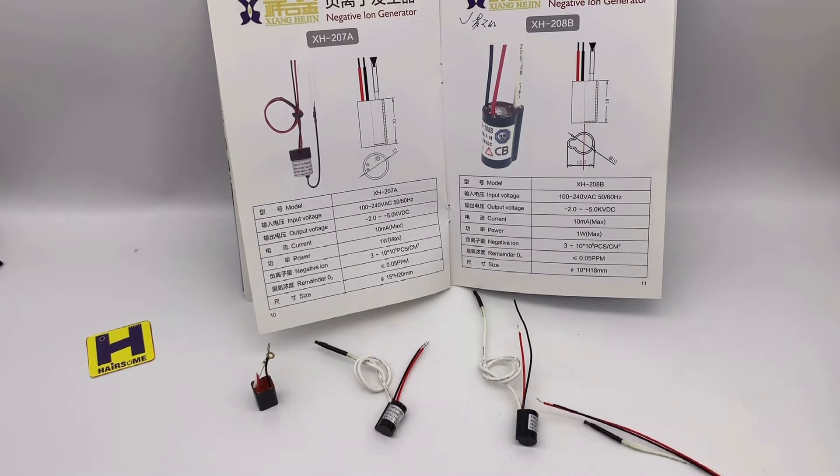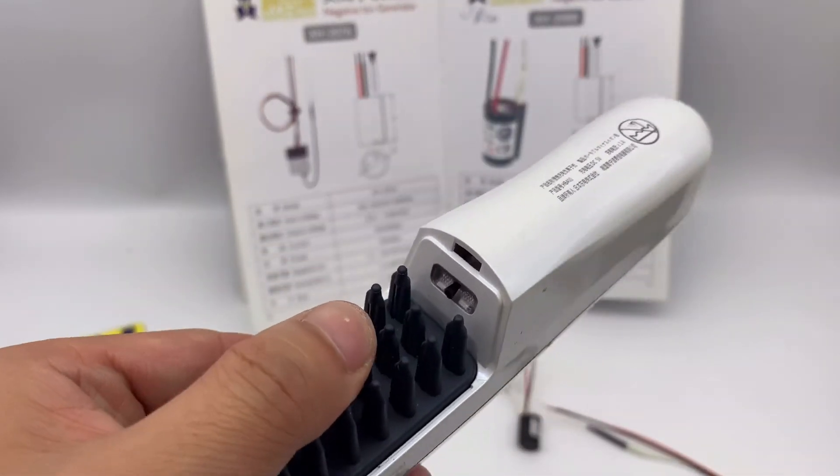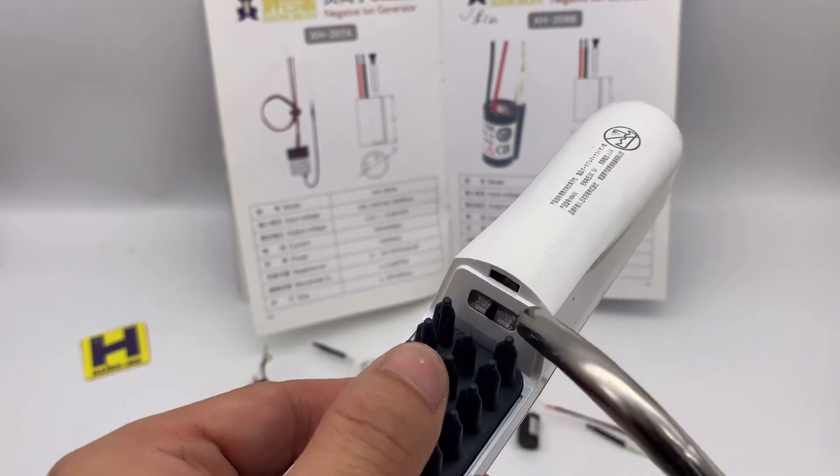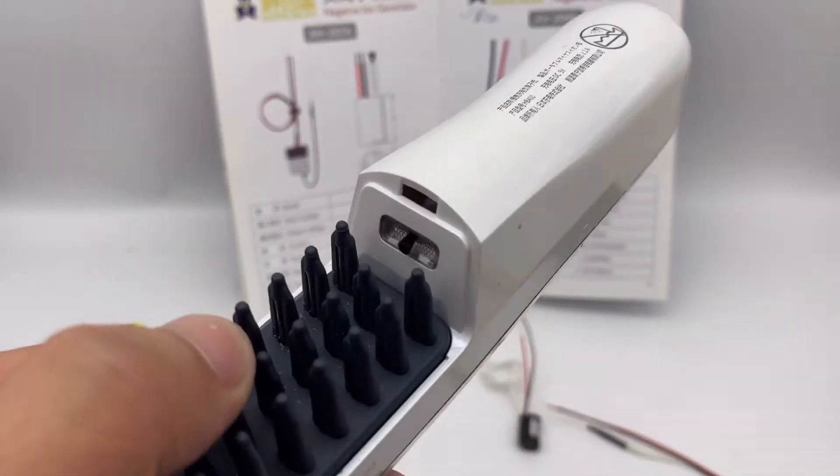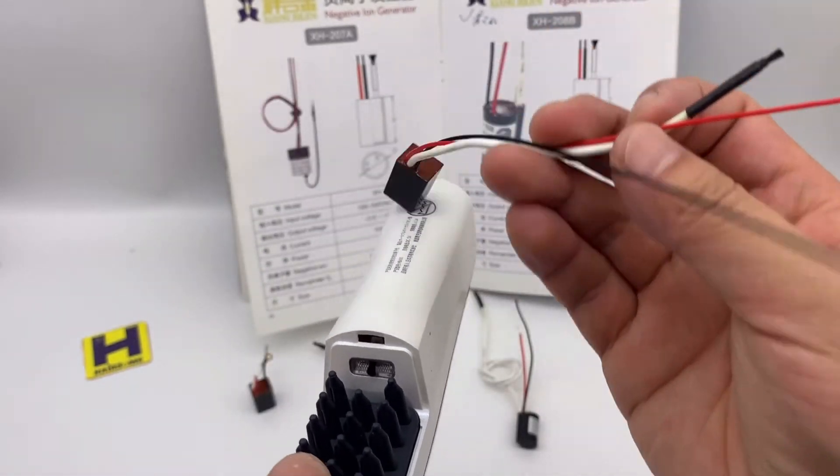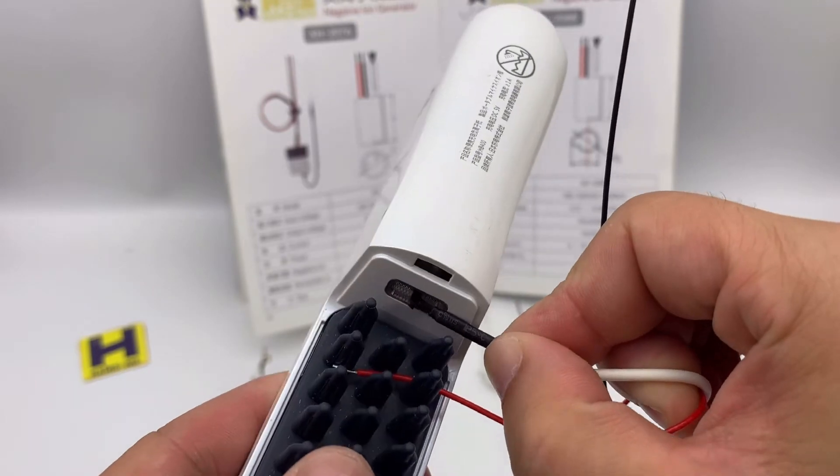This is the ionizer. There is a brush. Here is a little brush here. So there is a generator inside. There is a brush like this here.